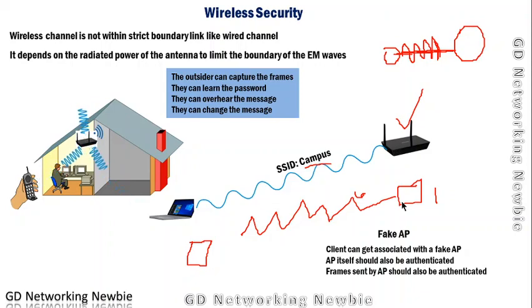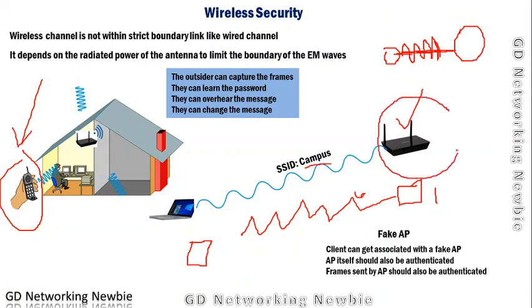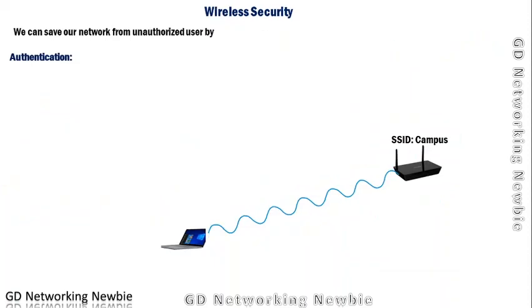This means the client that wants to connect to the network should be authenticated. In addition, the access point itself should also be authenticated by the user, so the user is not able to connect with a fake access point. This mutual authentication is an important point and is the reason we need wireless security.